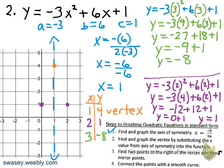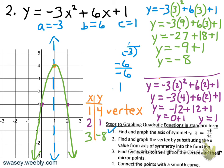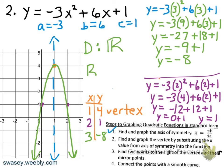We reflect the point (2, 1) across the axis of symmetry to get (0, 1), then connect those with a smooth curve. It's a parabola opening down, so it has a maximum point at the vertex. For domain and range: the domain is all real numbers since we can put any real number into this equation. The range — the y values go up to 4 and all others are below that — so y is less than or equal to 4.